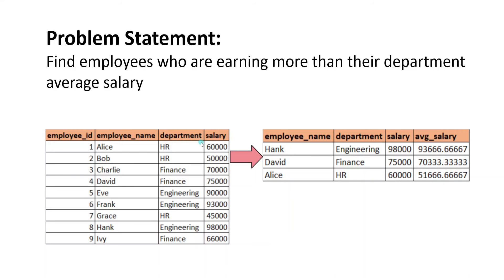Now I have to find out the employees who are earning more than that average salary. Coming to Alice, she is earning more than the average salary of the department, so this should be the output. Coming to Bob or Grace, they are earning lesser than the average salary of their department HR.